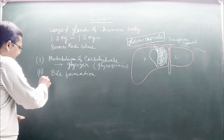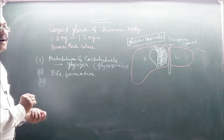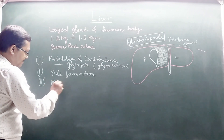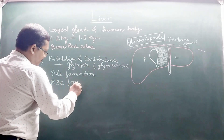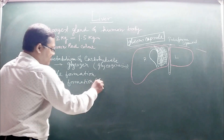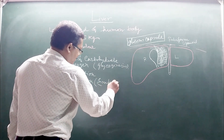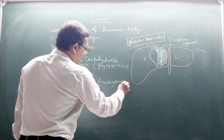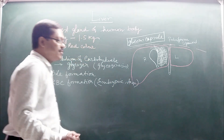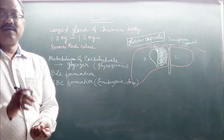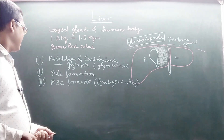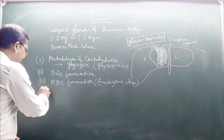The third function: in the embryonic stage, the liver is the main site for RBC formation. But in adult stage, RBCs are generally produced in the red bone marrow.